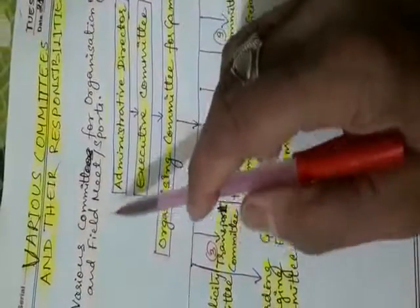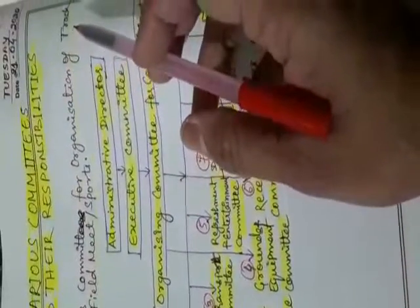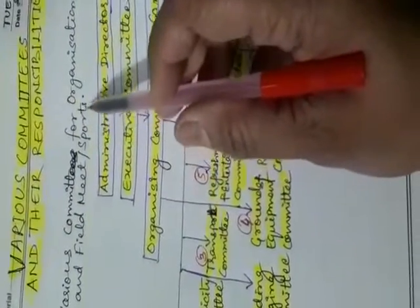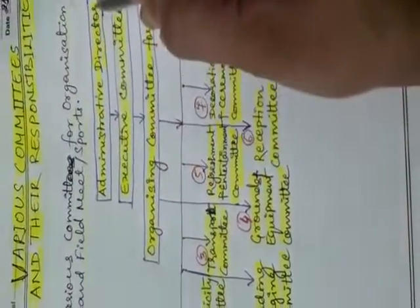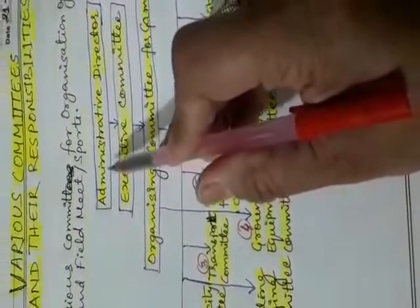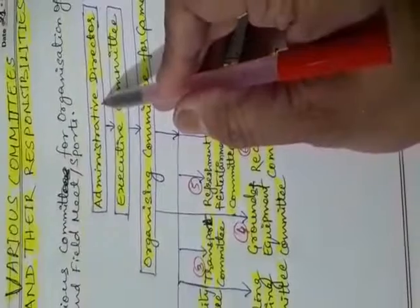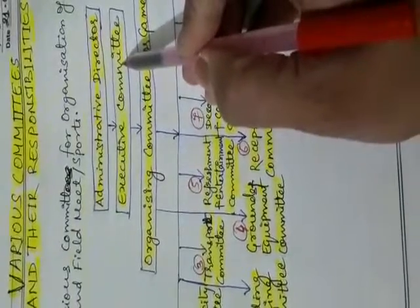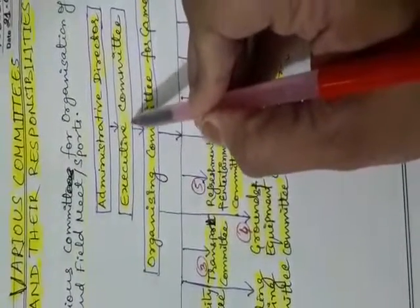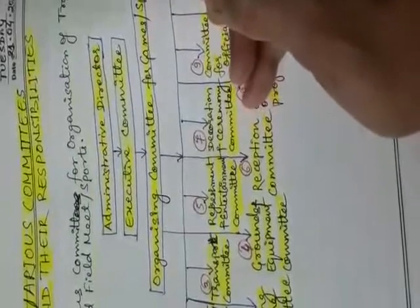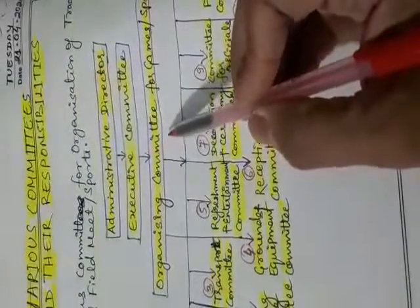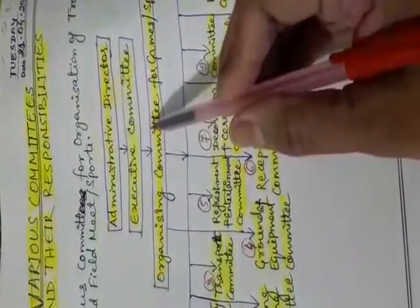See the chart below. It has been described: various committees for organization of track and field meet or sports. The 1st one is administrative director, under which the administrative director is headed by the head of the institution. Next, executive committees — executive committees are those who perform the duties. The next comes organizing committee for games and sports, which works under the executive committee.